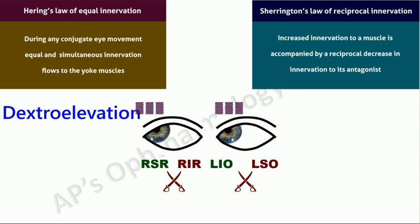For example, during convergence, while excitatory innervation is sent to both the medial recti, inhibitory messages are sent to both lateral recti.